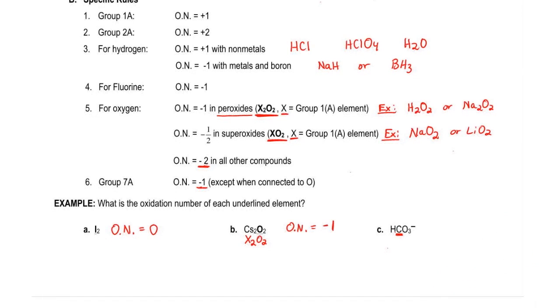So we want to find the oxidation number of carbon. The thing is, we never came up with a rule for carbon. It's nowhere in the specific rules. So because of that, we don't know what it is and therefore, it's X.